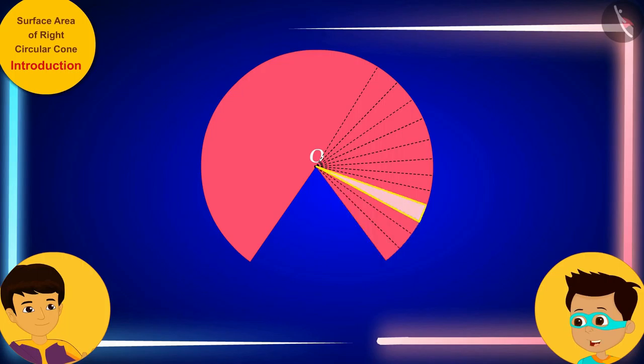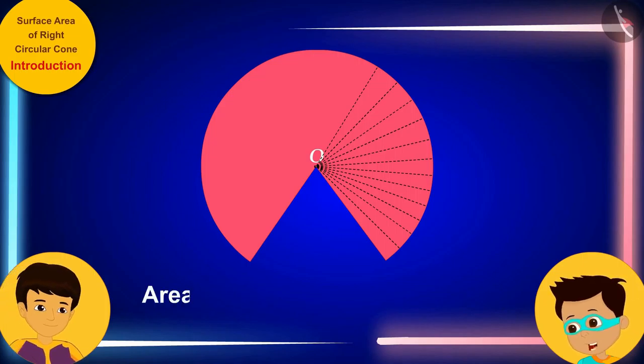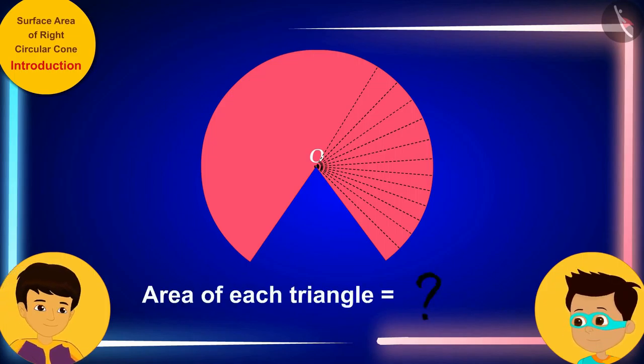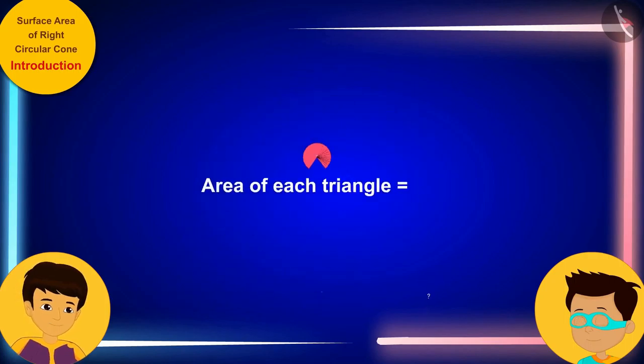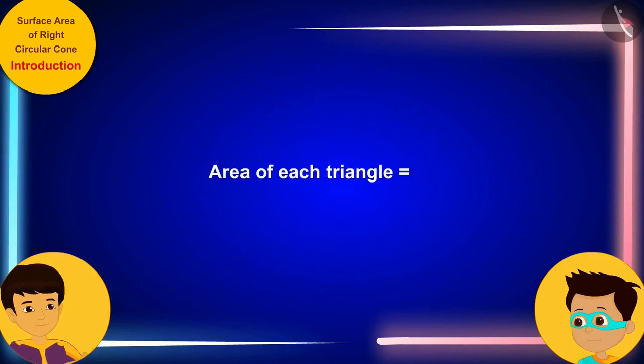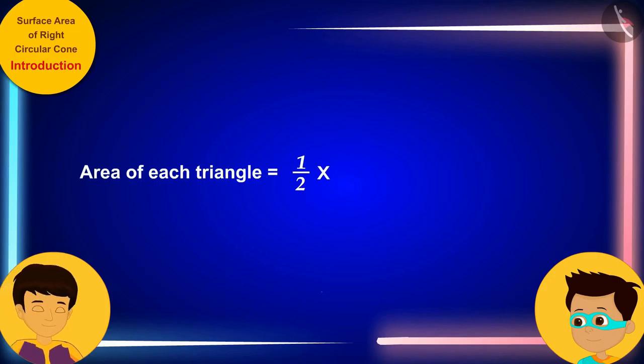Look, Manas, each piece is in the shape of a triangle. So, can you tell me the area of each triangle? The area of each triangle will be 1 by 2 times its base multiplied by the height, which is L here.